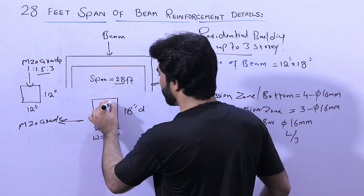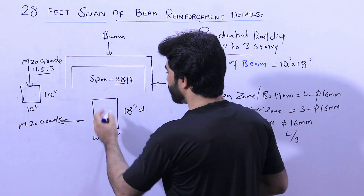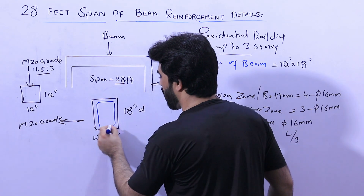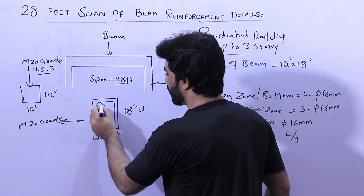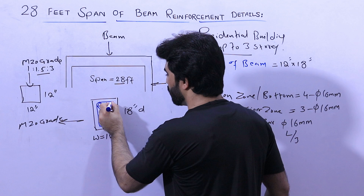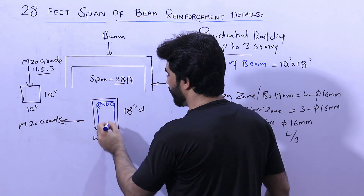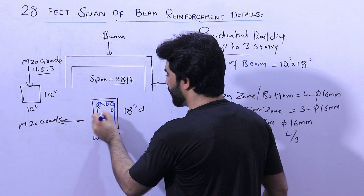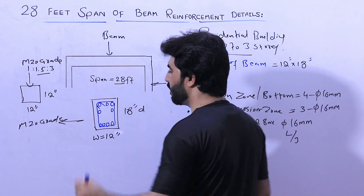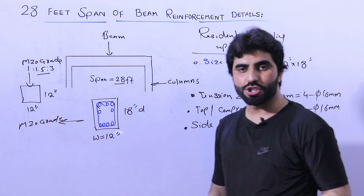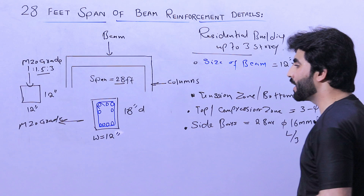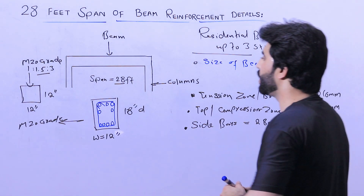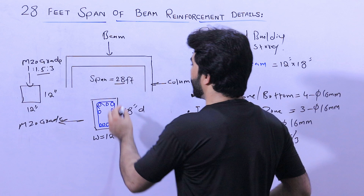This is a stirrup with hooks. We have 1, 2, 3, and 4 bars at the bottom. Two side bars are provided at the top portion at the distance of L by 3. What is L by 3? It is the main span divided by 3.